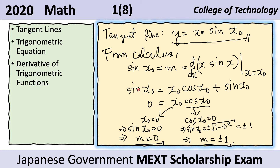Now we try to solve for x sub o. We cancel matching terms and are left with this equation. One of the solutions is x sub o equals zero, and the other solution is cosine of x sub o equals zero. If x sub o equals zero, then the slope — sine of x sub o — must also be zero because sine of zero is just zero. Therefore, our slope is m equals zero.